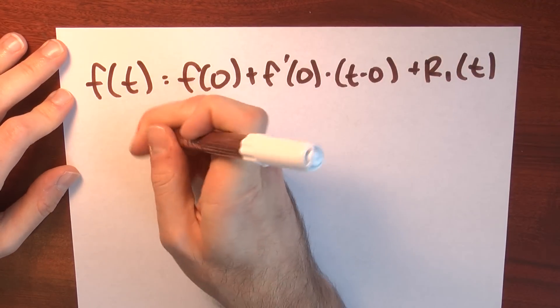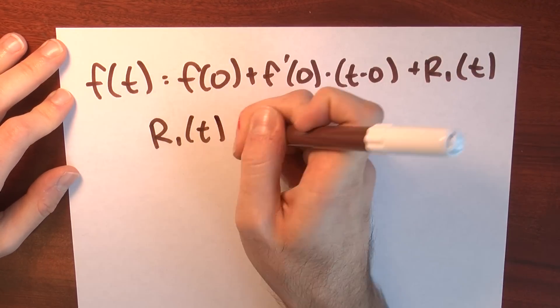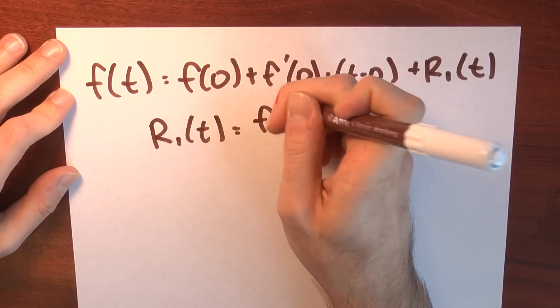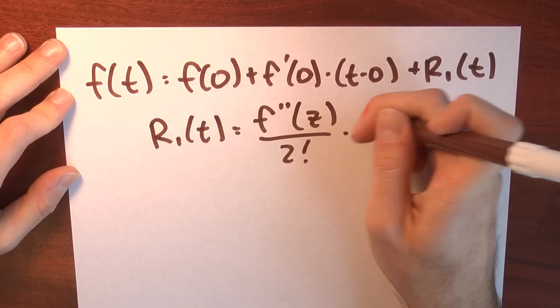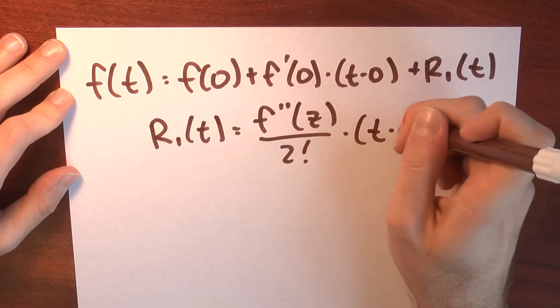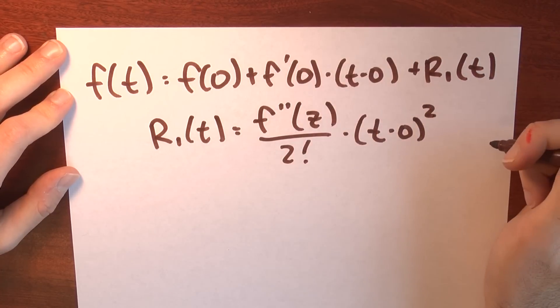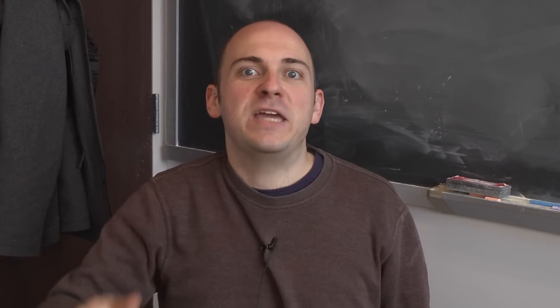And what do I know about the remainder term? Well, r sub 1 of t is equal to the second derivative at some point z divided by 2 factorial times t minus 0 squared. I can bound that remainder term, right?